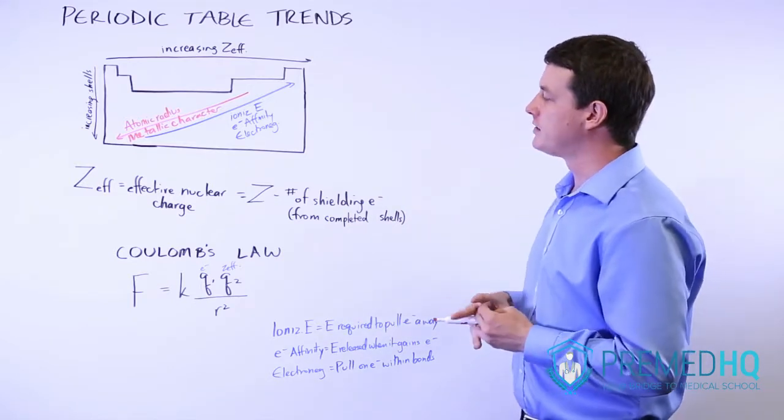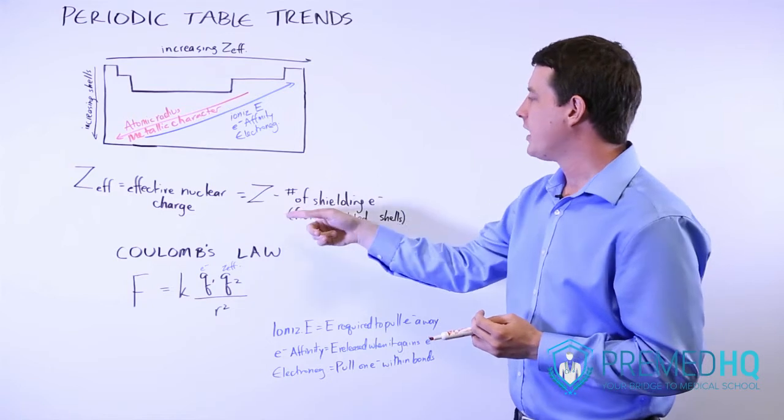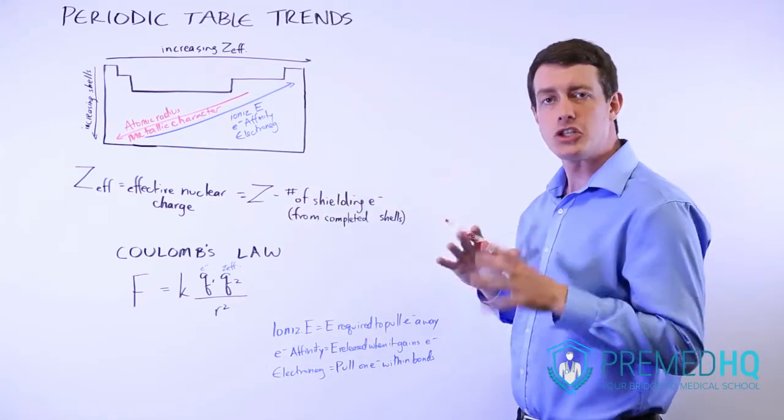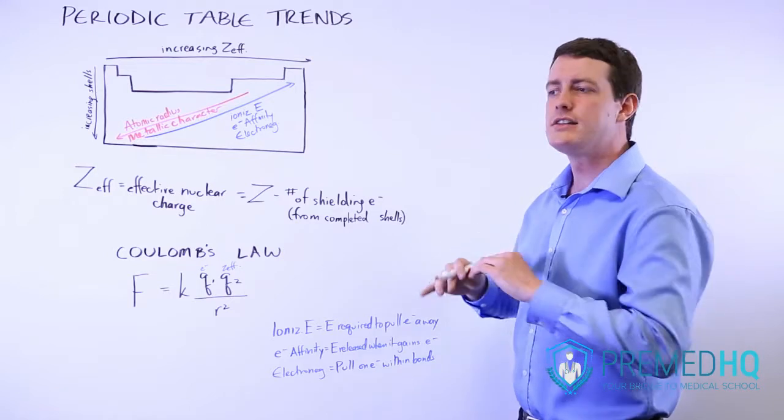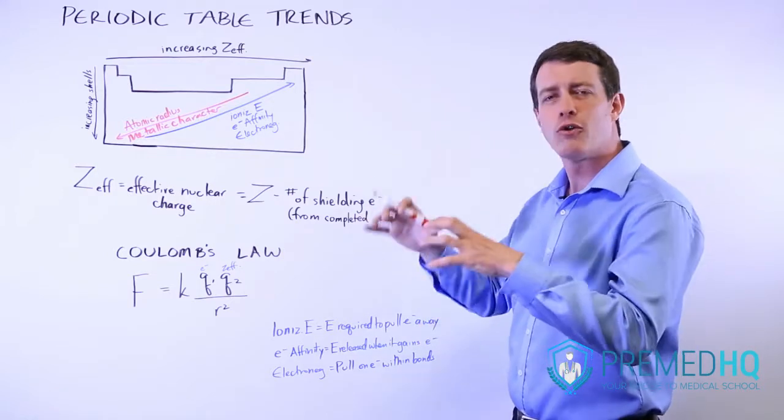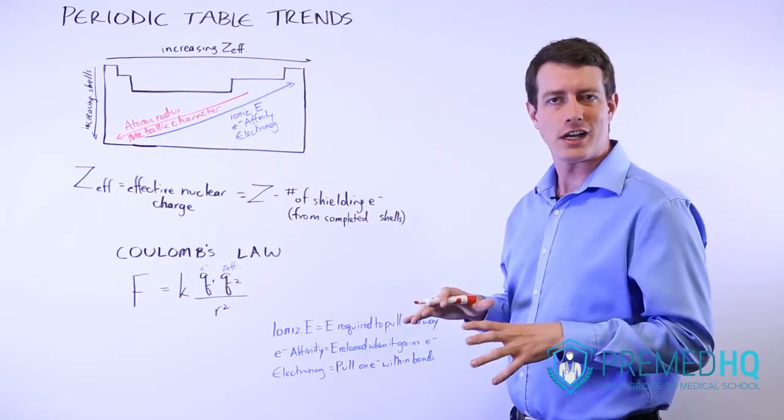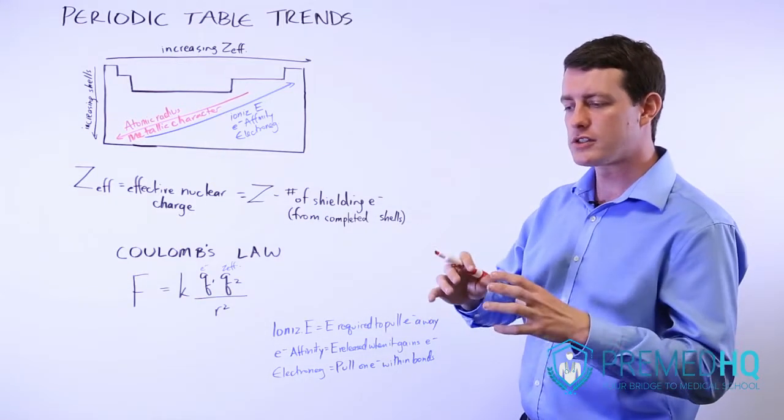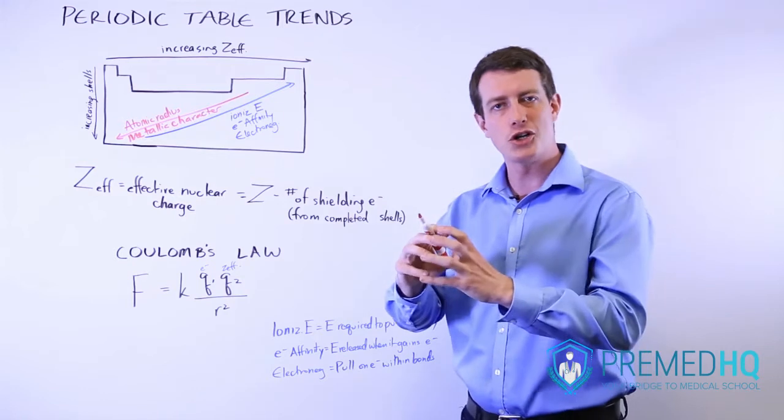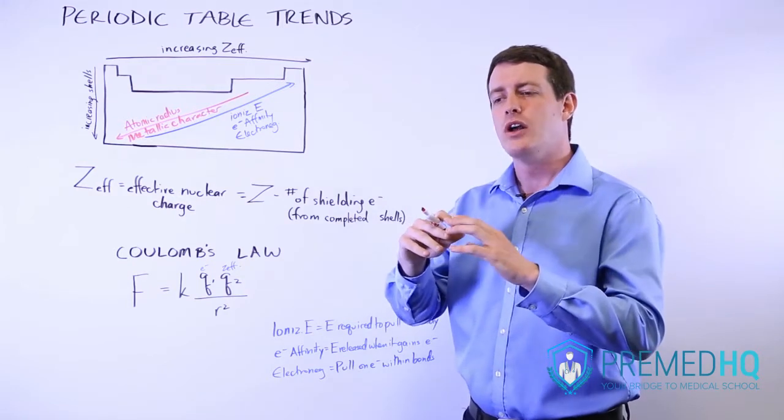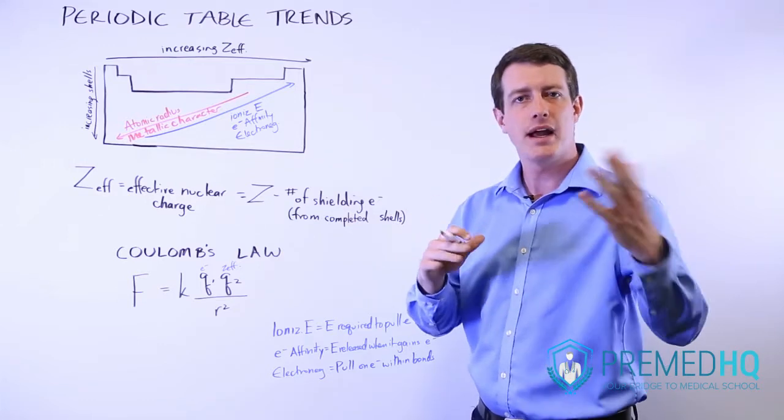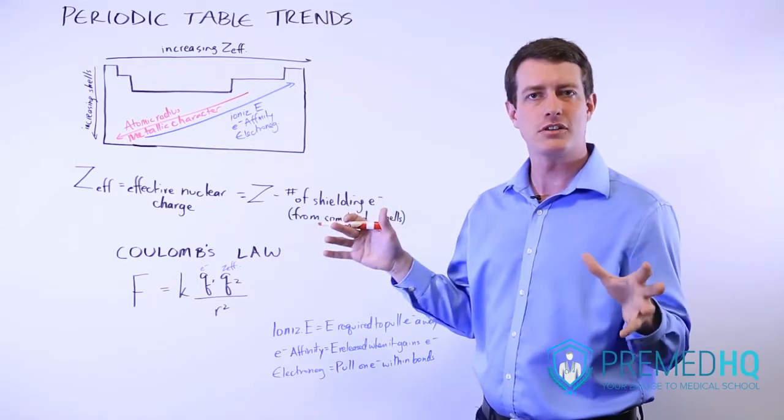And the way that you calculate that is you take Z, the atomic number, and subtract from it the number of shielding electrons. And what the shielding electrons are is any electrons that are in already completed orbital shells. And so what that means is essentially the already completed shells absorb some of the charge of the nucleus. And so whatever charge makes it out is going to be the charge that actually impacts those outer level valence electrons.